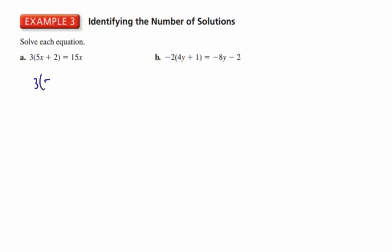We have 3 times 5x plus 2 is equal to 15x. So the first thing this is asking me to do is to distribute, and I end up with 15x plus 6 is equal to 15x. That's an indication that something might not be so good here, because a number plus 6 doesn't usually equal that number itself.